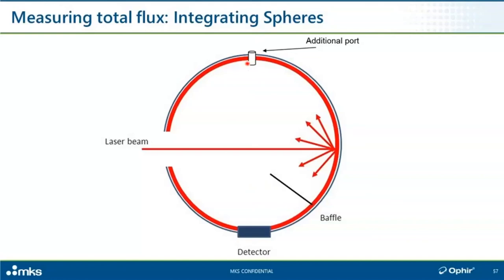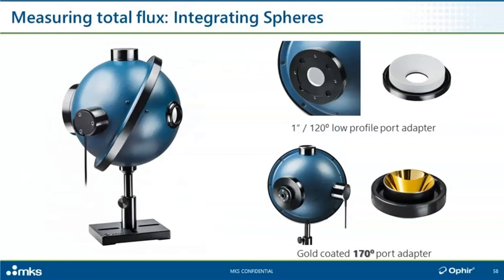Sometimes integrating spheres are used with collimated beams to take advantage of multiple sampling ports or to reduce the power and power density on the detector so you can use fast sensors. We have a six-inch integrating sphere with four ports and all sorts of accessories configurable for widely diverging or collimated beams, with special port adapters for all the different types of applications — some white and diffused, some black and highly absorptive. For example, VCSEL applications have to face those challenges a lot.